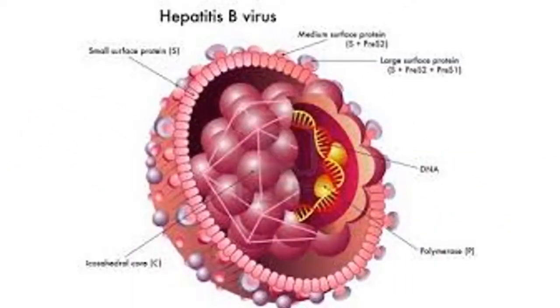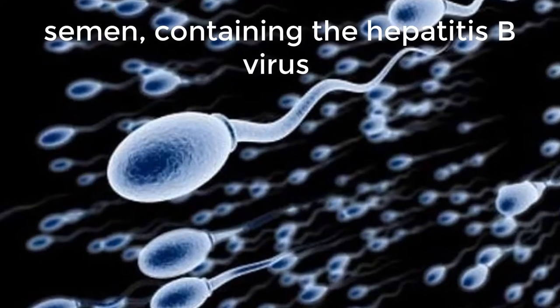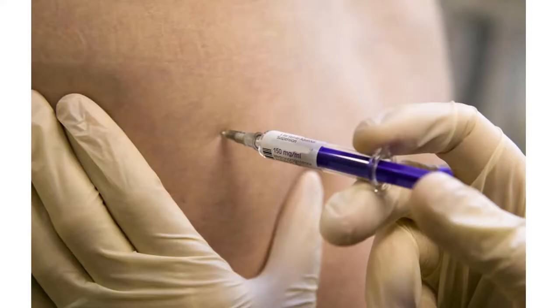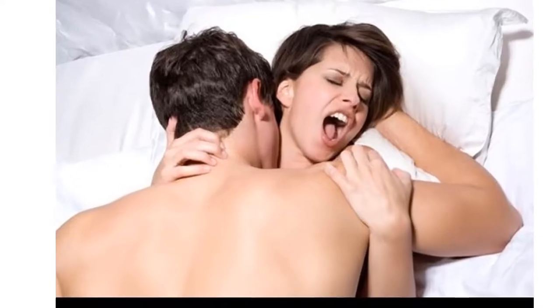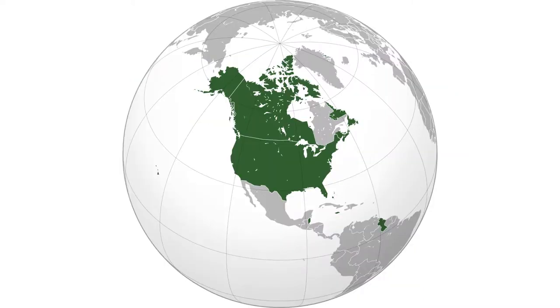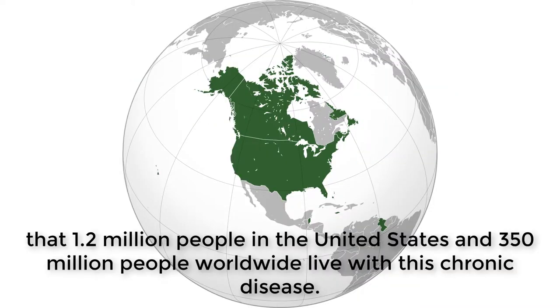Hepatitis B. Hepatitis B is transmitted through contact with infectious body fluids such as blood, vaginal secretions, or semen containing the Hepatitis B virus. Injection drug use, having sex with an infected partner, or sharing razors with an infected person increase your risk of getting Hepatitis B. It is estimated that 1.2 million people in the United States and 350 million people worldwide live with chronic disease.